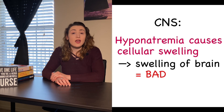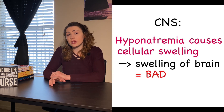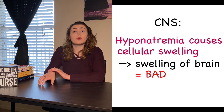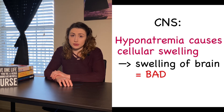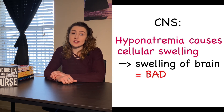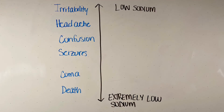The most serious signs and symptoms of hyponatremia revolve around effects on the central nervous system. With low sodium in the extracellular space, water flows freely into cells by osmosis, causing swelling — and brain cells are very sensitive to this. On a scale of severity: initially there may be irritability or headache; as sodium drops further, confusion develops; at severely low levels, seizures, coma, and eventually death can occur.